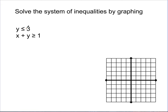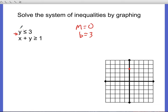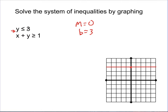Let's look at more examples. The first one we'll graph in red: y is less than or equal to 3. This looks a little different — the y-intercept is 3 but there's no x value, so the slope is 0. We mark the y-intercept and draw a horizontal line. Since it has the equal sign, it's a solid line at y equals 3. Since y is less than 3, we shade below the line.